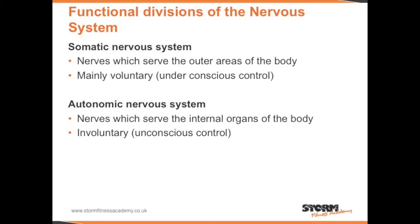There are also functional divisions of the nervous system. The somatic nervous system has nerves that serve the internal organs of the body. They are involuntary and under unconscious control.